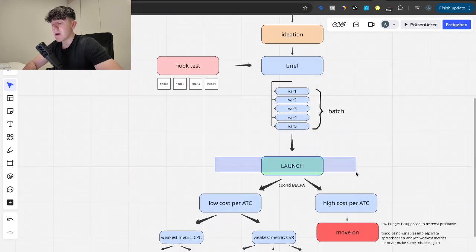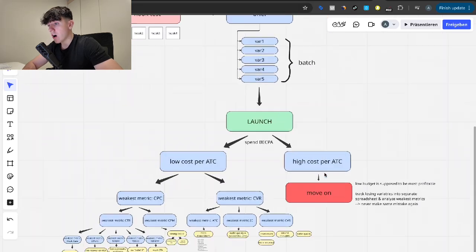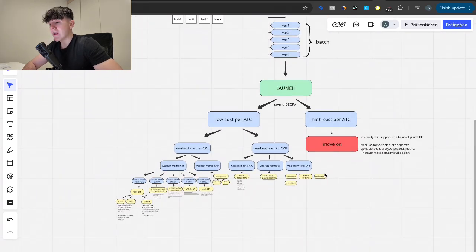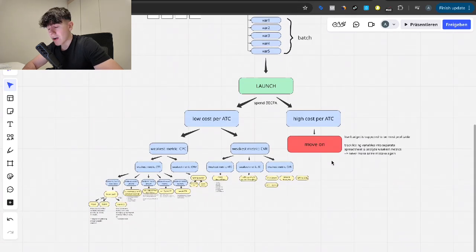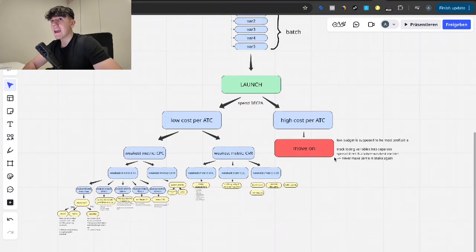This is kind of how the pre-launch phase looks like before we actually even touch anything when it comes to normal creative testing campaigns inside of the ad account. Now that we have launched everything, there's a hundred things that can go wrong and that will go wrong. The mindset that you need to already adapt before we even get into breaking this everything down is that every ad breaks at some certain scale. There's no ad that scales unlimitedly high.